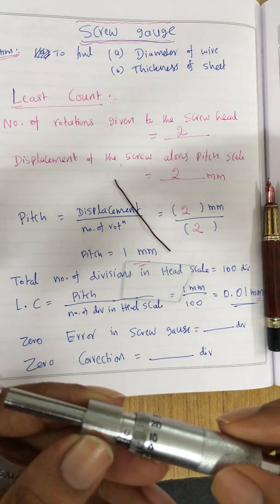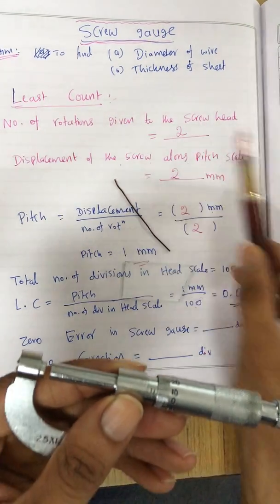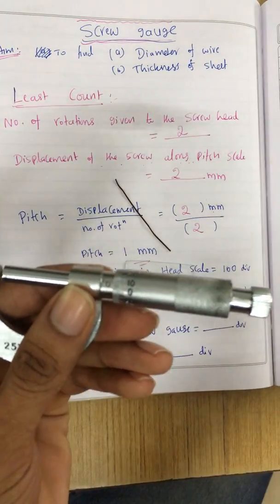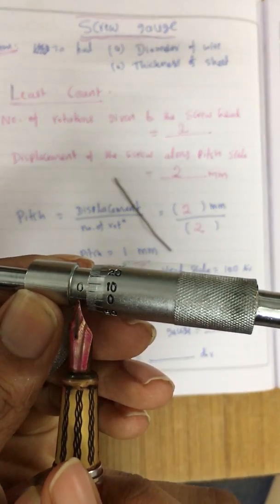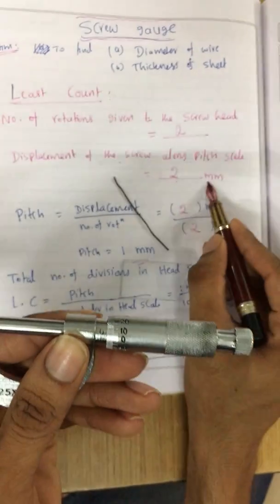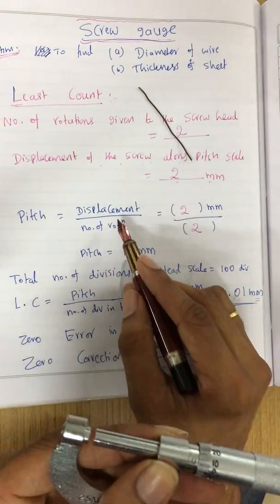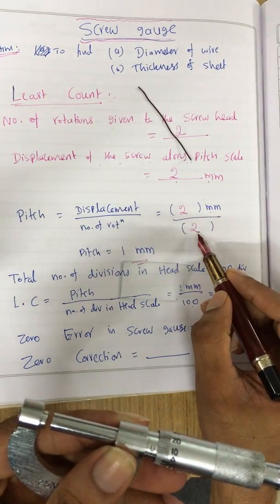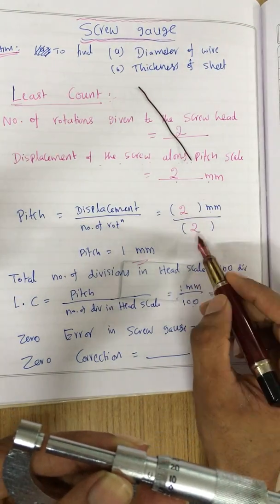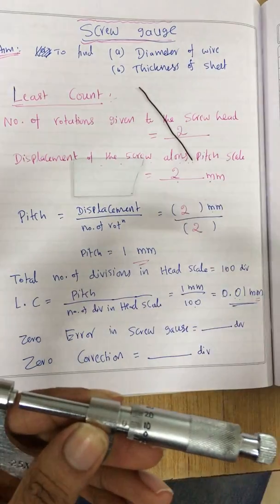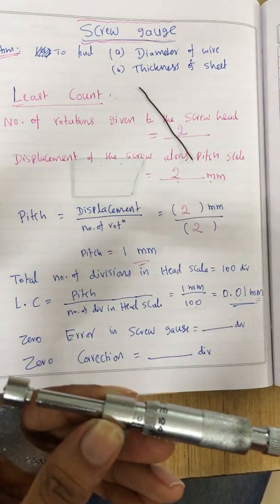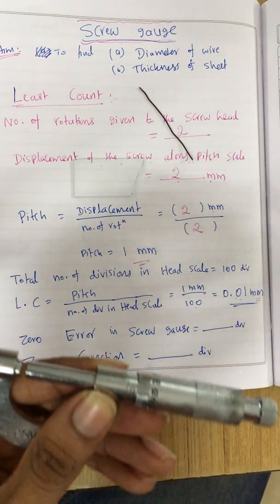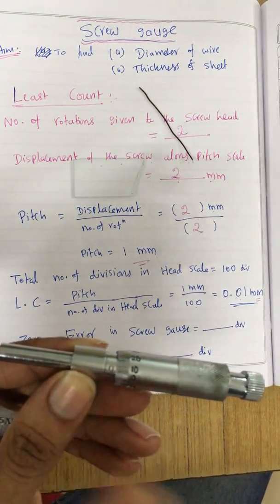I met zero again, so two rotations have been given. I have to find out what is the displacement of the screw along the P scale. Displacement is 2 millimeters. Pitch equals displacement divided by number of rotations: 2mm divided by 2 equals 1mm. That is the pitch. It doesn't matter how many rotations you give — pitch is going to be the same. That means for every one rotation there is a 1mm shift along the P scale.